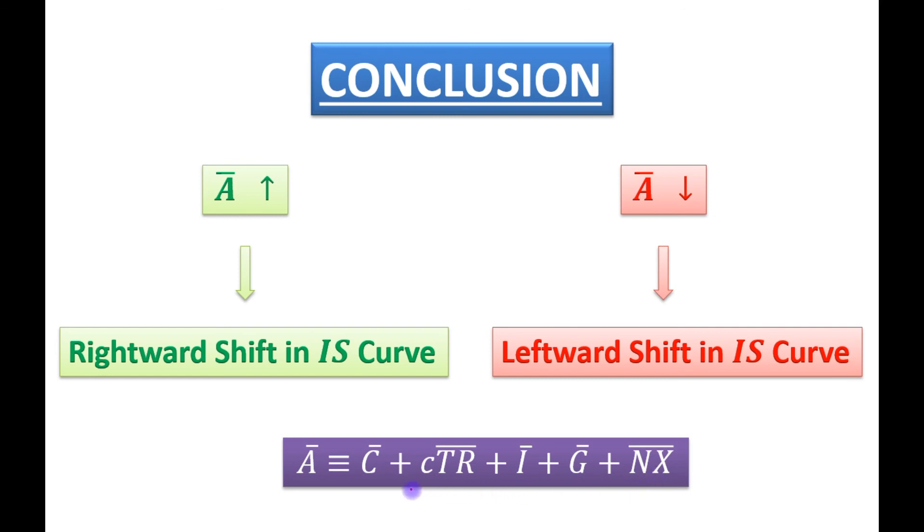So if any one of these components increases, then there will be rightward shift in IS curve. And if any one of these components decreases, then there will be leftward shift in IS curve.